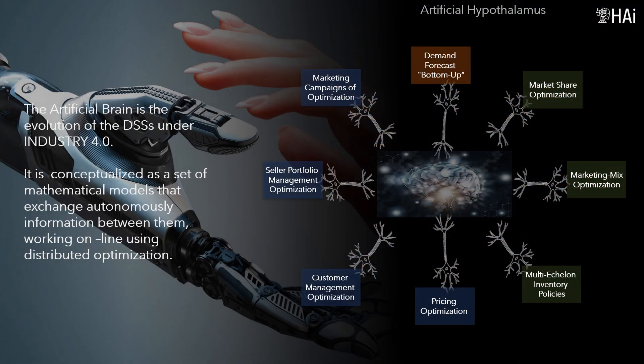The artificial brain is the evolution of Decision Support Systems under the Industry 4.0 revolution, conceptualized as a set of mathematical models that autonomously exchange information between them, working online using distributed optimization.